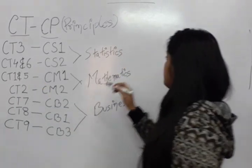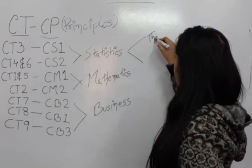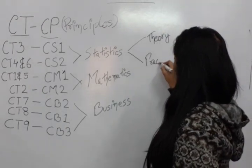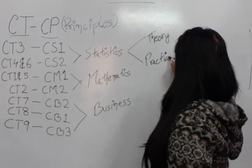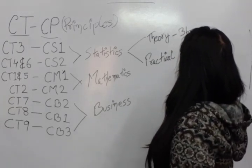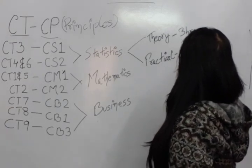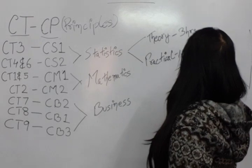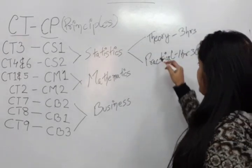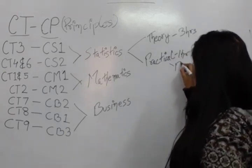Now, this Statistics paper is again divided into 2 parts, a Theory paper and a Practical paper. This Theory paper is for 3 hours whereas the Practical paper is for 1 hour 30 minutes. These 2 are separate papers and are held separately and might be on different dates as well. This Practical paper is basically about programming.